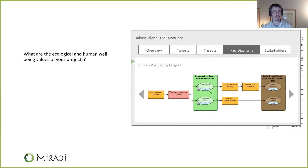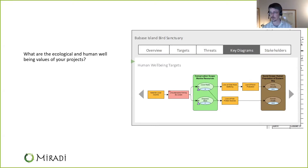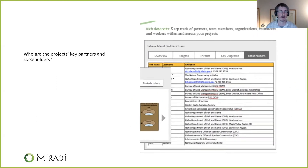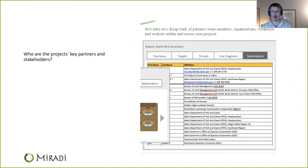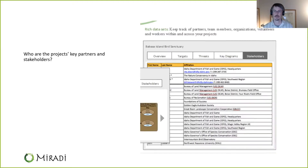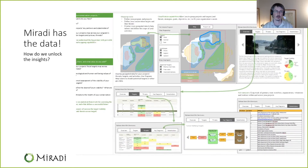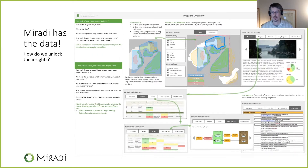What are the ecological and human well-being values of your projects? This allows you to highlight key conceptual models and results chains so different stakeholders can get the true essence of what you're trying to accomplish. And finally, who are the project's key partners and stakeholders?